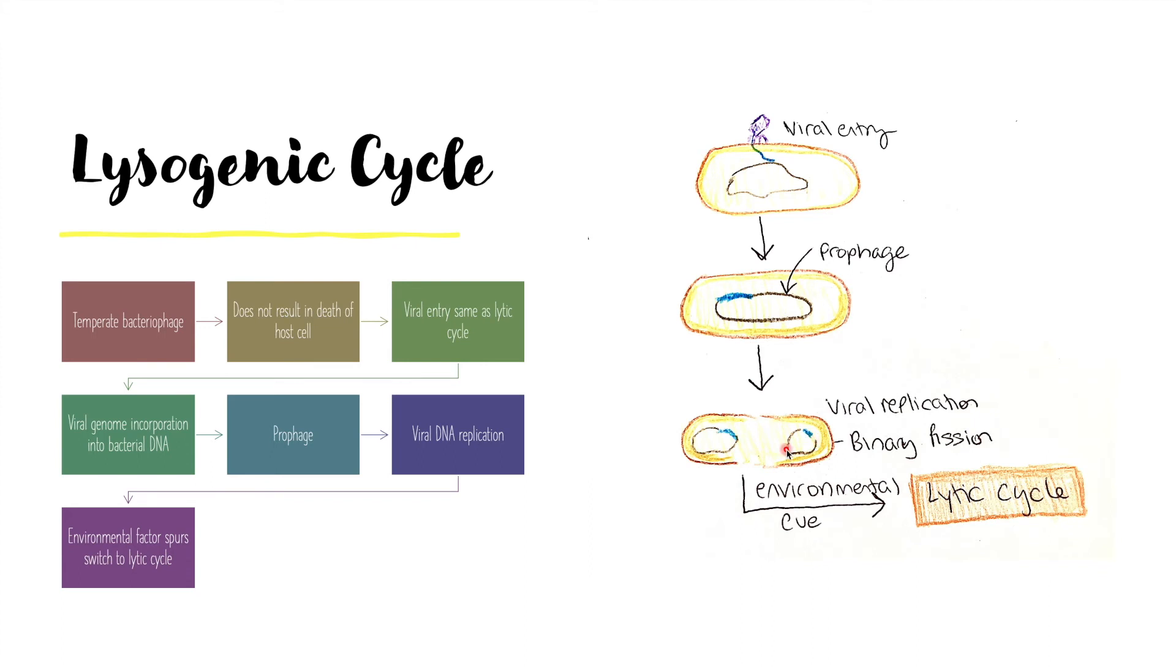The expression of the prophage can generate a phenotypic change in the bacteria. Then, the lysogenic cycle can switch to the lytic cycle, usually due to an environmental factor. Now, the virus becomes virulent and the viral genome is cut from the bacterial DNA. The lytic cycle then takes place, and the viruses are eventually released, resulting in the destruction of the cell.